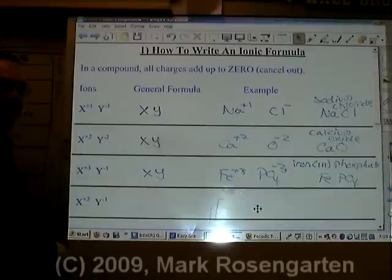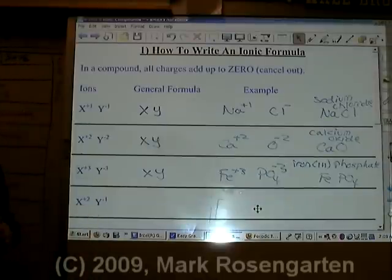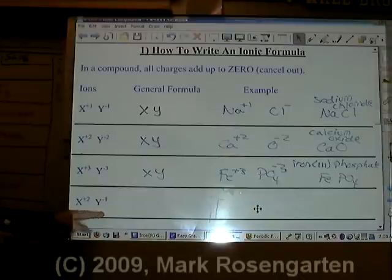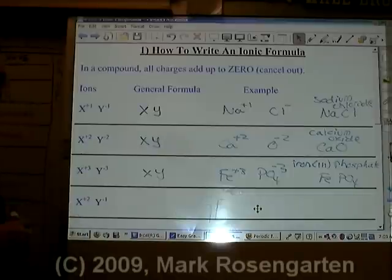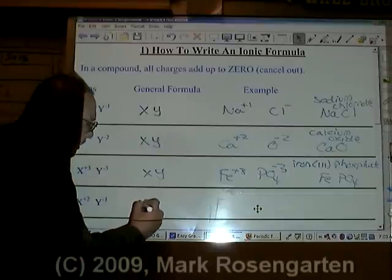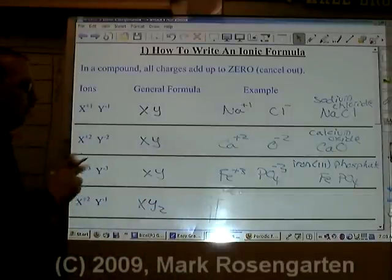X⁺² and Y⁻¹. Now these guys don't cancel each other out. So what you do is ask yourself, how many of the smaller charge do you need to cancel out one of the larger charge? Well, it takes two minus ones to cancel out a plus two, so the formula is XY₂.